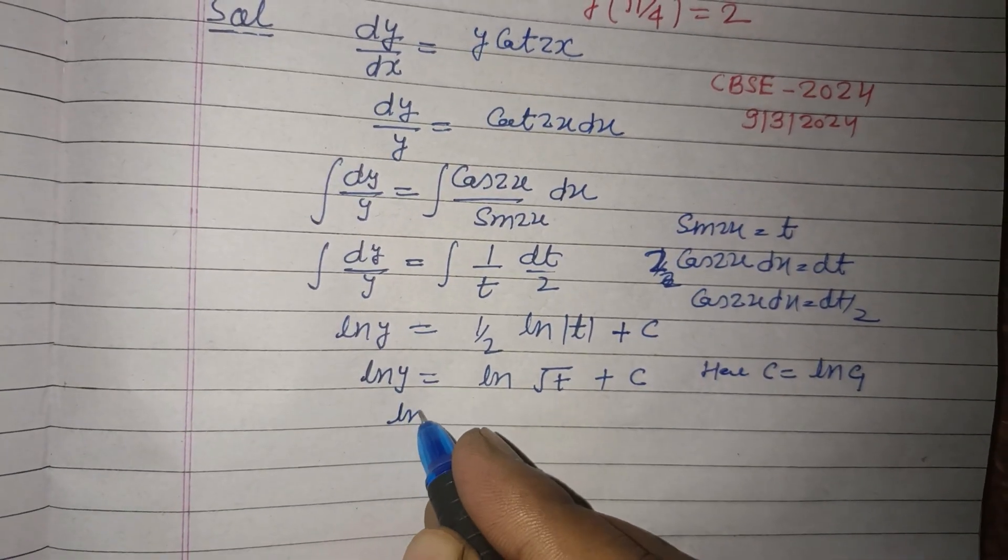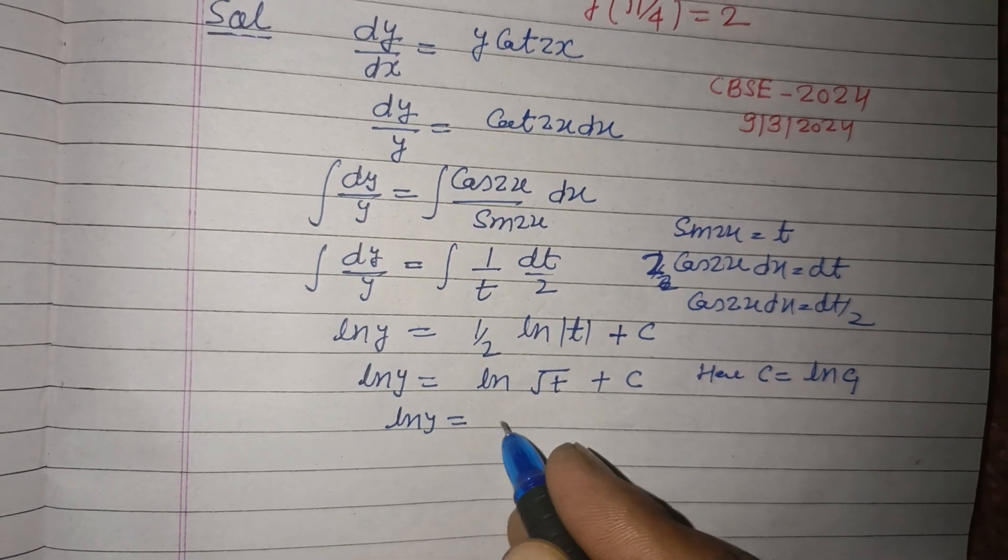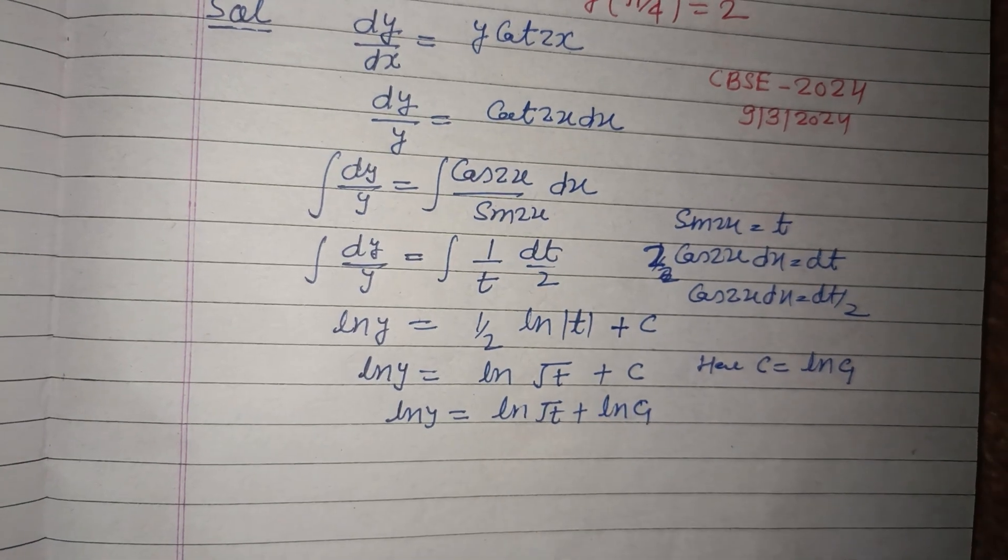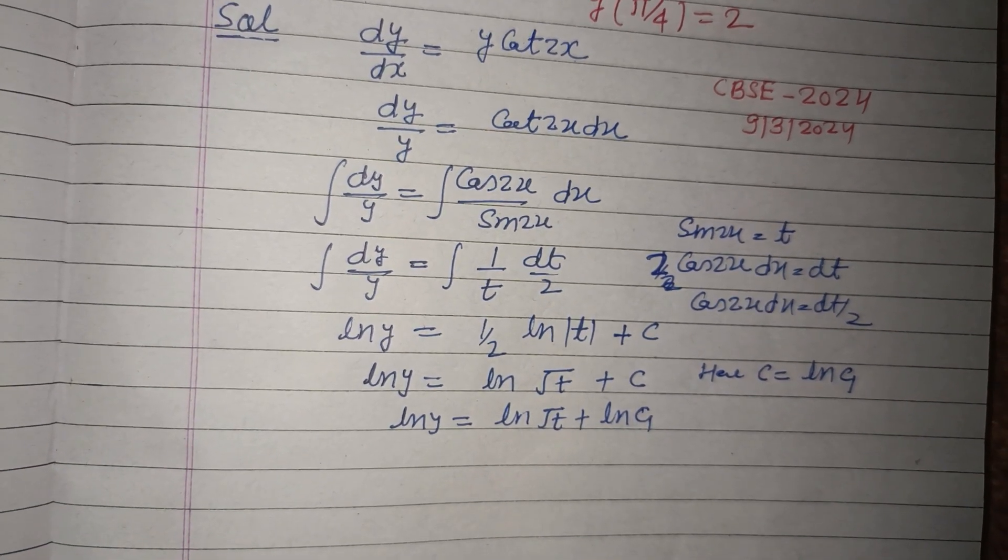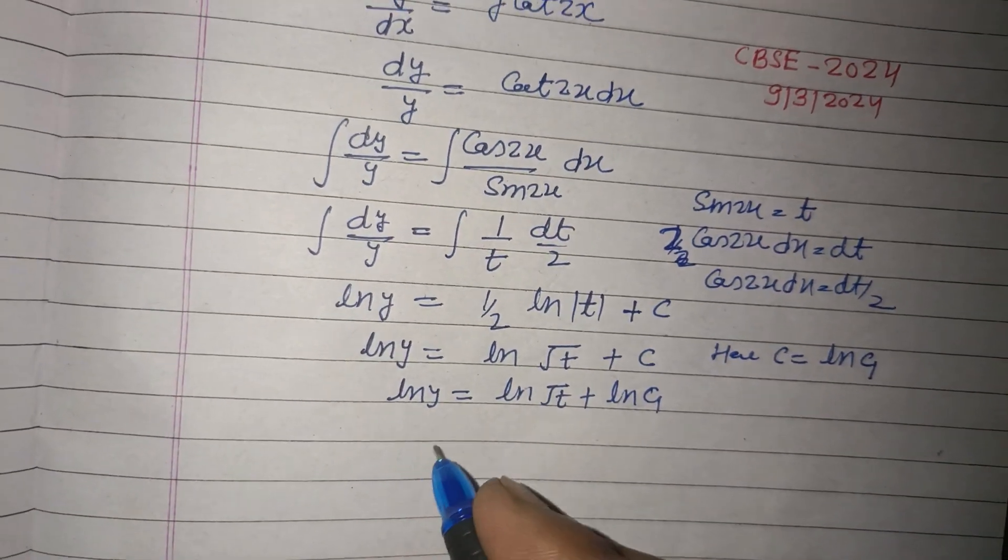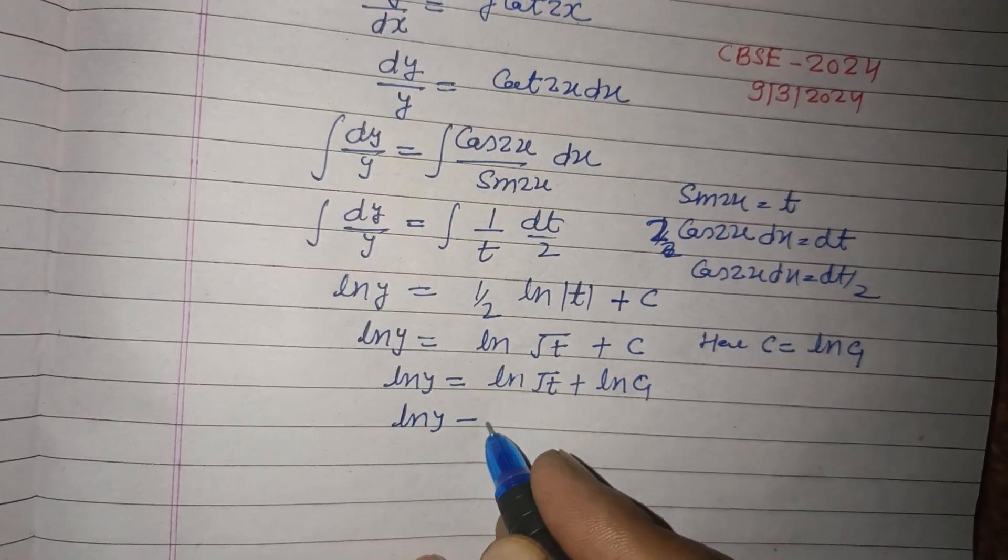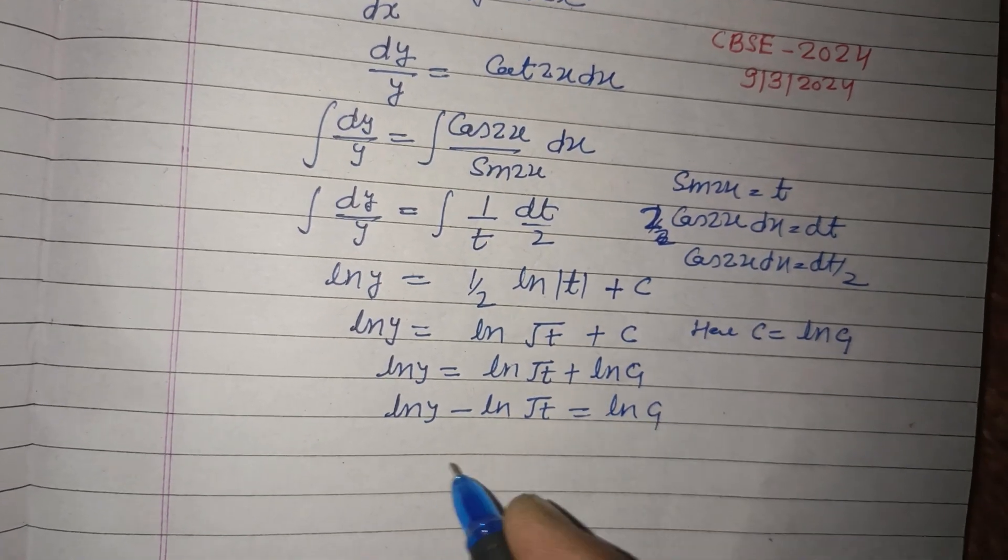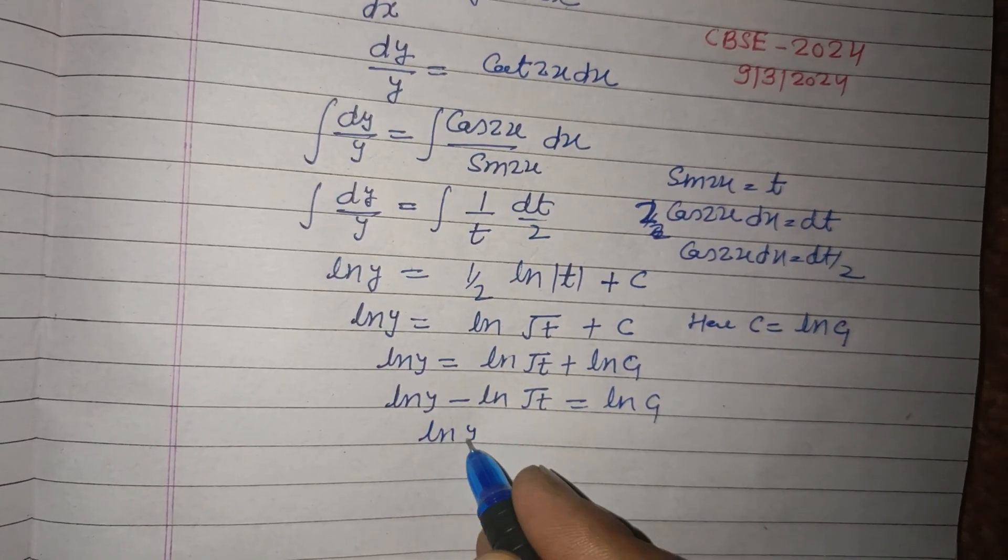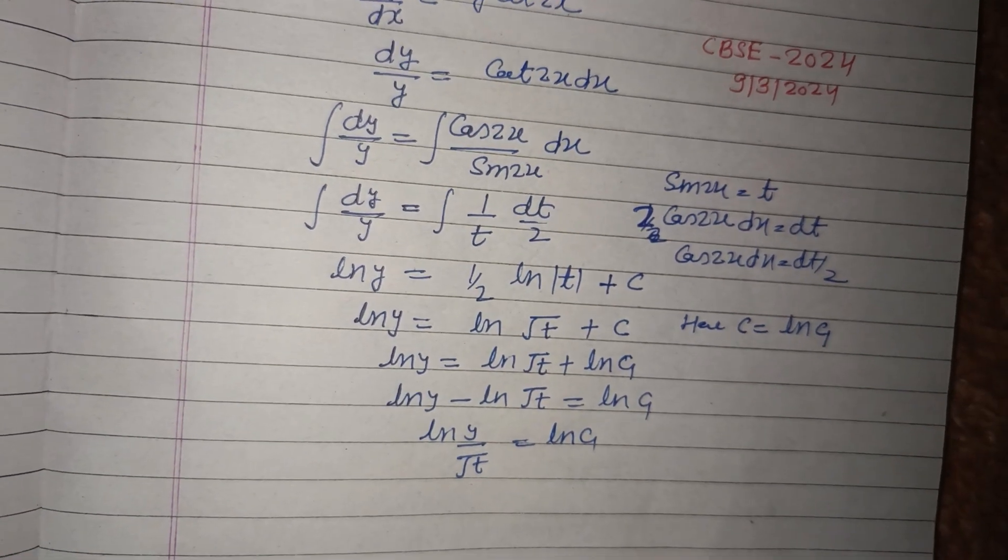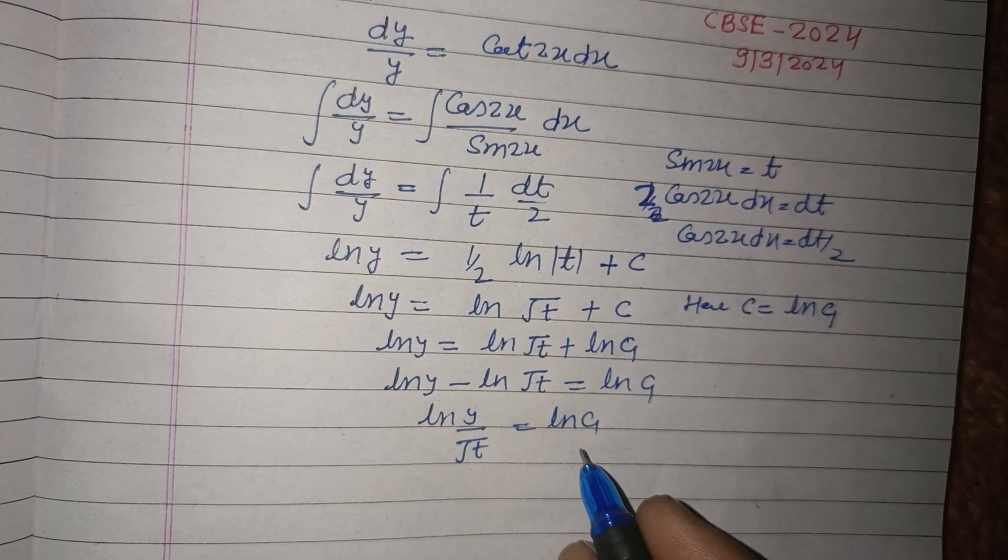So ln y equal to ln root t plus ln c1. From here, ln y minus ln root t equal to ln c1. So this is ln(y upon root t) equal to ln c1.